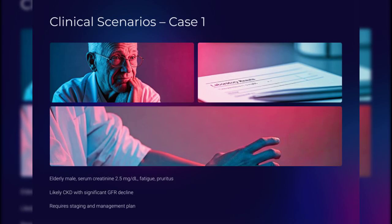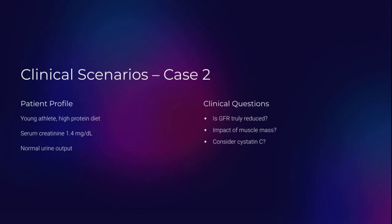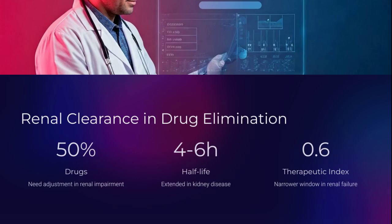An elderly man with creatinine of 2.5 and fatigue — his GFR has likely plunged. This is chronic kidney disease in progress: start staging, start planning. His kidneys are whispering for help. A young athlete with creatinine of 1.4 and a high-protein diet — is this renal dysfunction or just more muscle mass? Creatinine can be misleading; in such cases, consider using cystatin C.